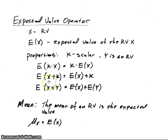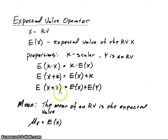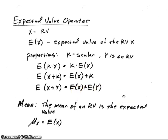If we add some constant to our random variable x, then that'll just be the expected value of x plus k. And also if we have two random variables, x and y, and we add them together, the expected value of those two will be equal to the expected value of x plus the expected value of y.